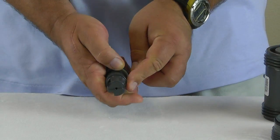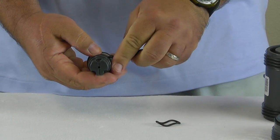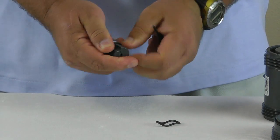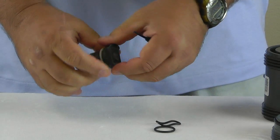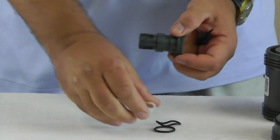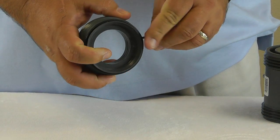Next, using the small flathead screwdriver or other blunt tool, remove the stem o-rings and stem bearing. Next, remove the carrier o-ring.